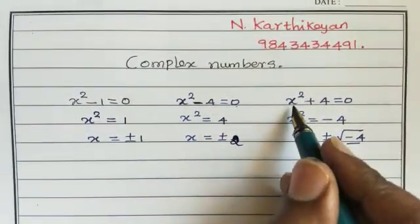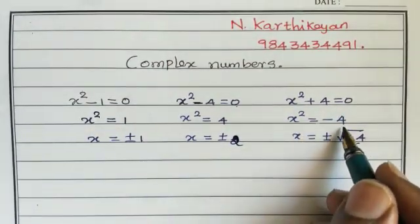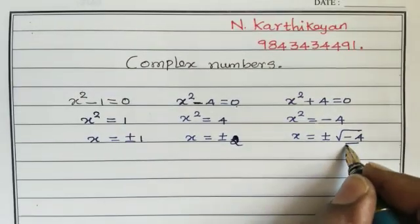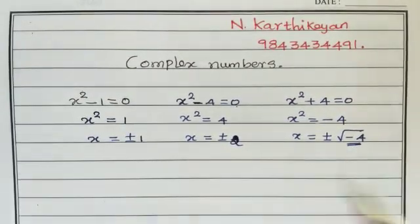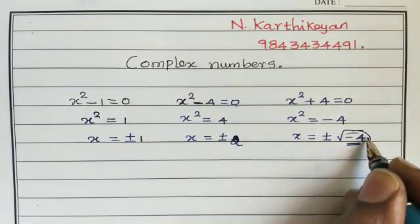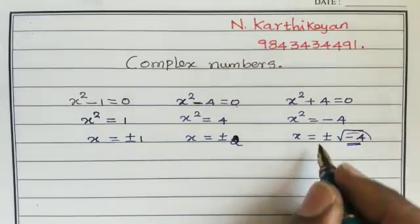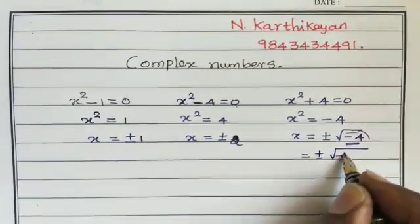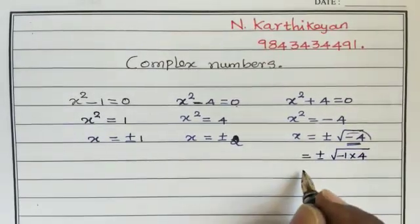Then, what is the solution of x² + 4 = 0? Here, x² = -4, so x = ±√(-4). The square root of -4 is not a real number. We can write this as √(-1 × 4).